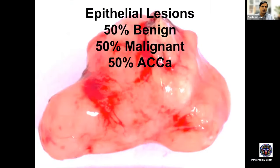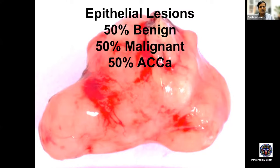Going on to epithelial lesions: the earlier belief that 50% are benign and 50% malignant is not really true. There are more benign tumors than malignant — about 60 to 70% are benign, 30 to 40% malignant. Adenoid cystic carcinoma is the most predominant malignant tumor. Adenocarcinoma has very few case reports, but adenoid cystic carcinoma is the most common malignant tumor of the lacrimal gland.